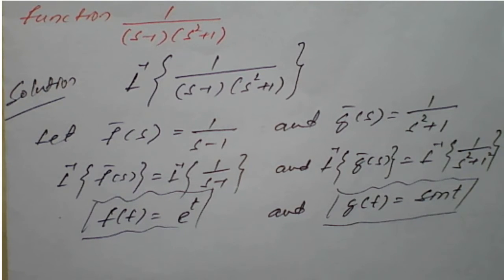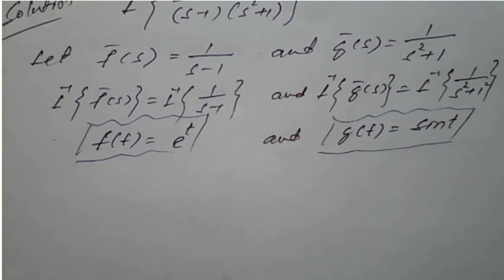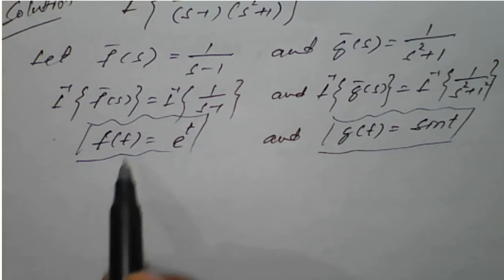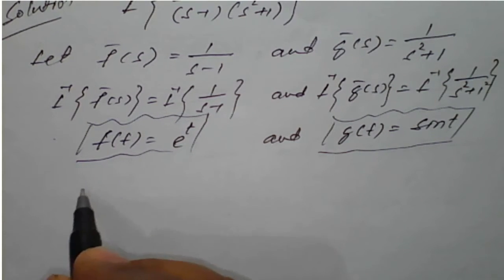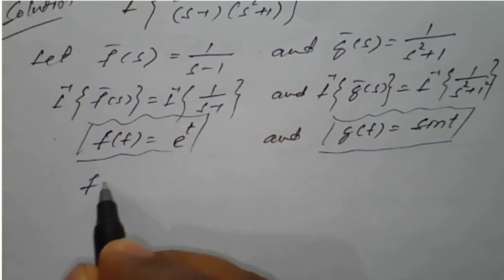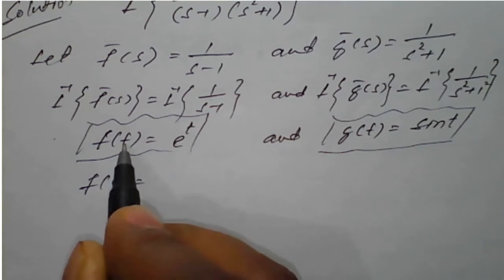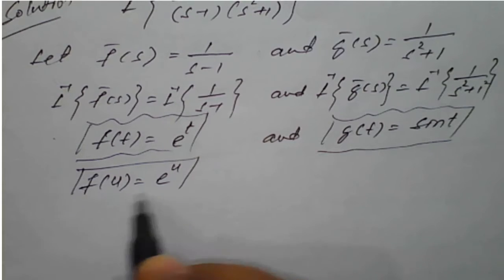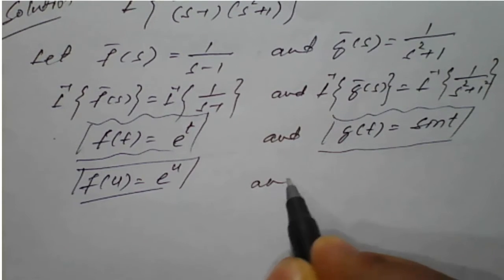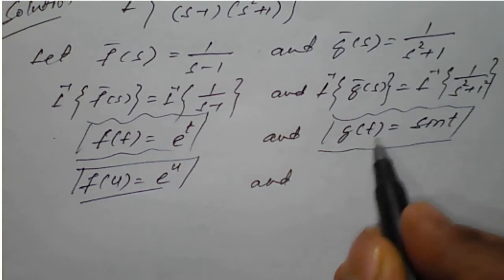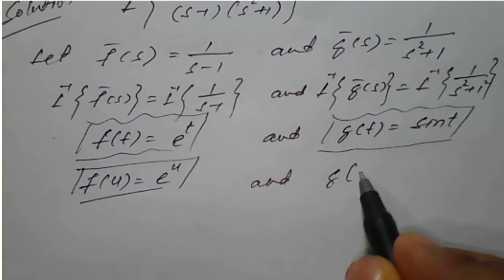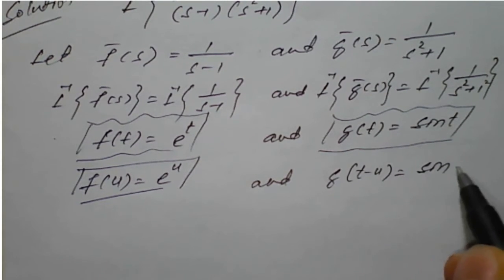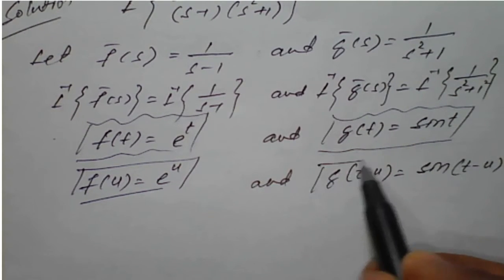As per the convolution theorem, we need to change t in terms of u and (t minus u). So f(t) becomes f(u), meaning t is replaced by u, giving e raised to u. And g(t) becomes g(t minus u), giving sine of (t minus u).